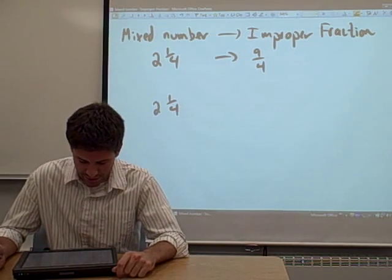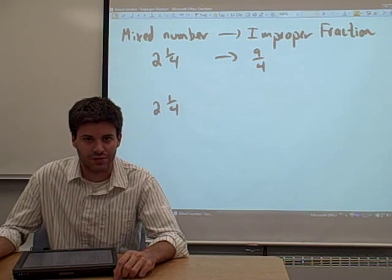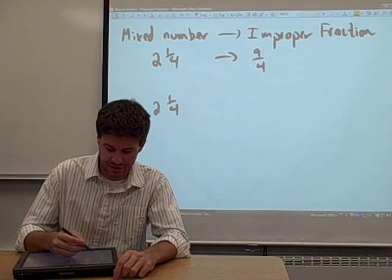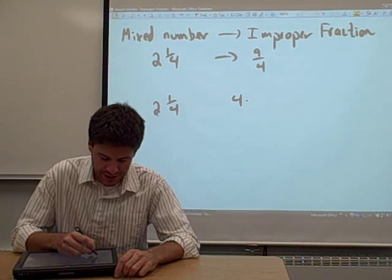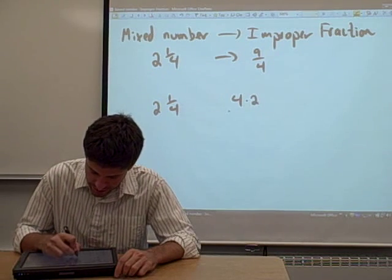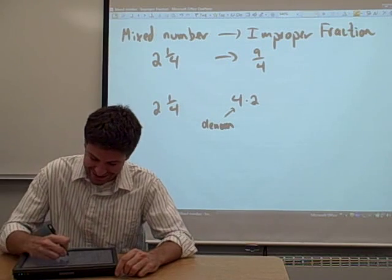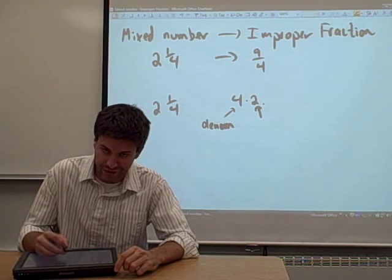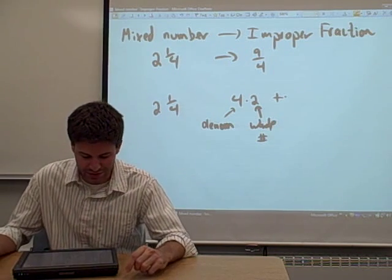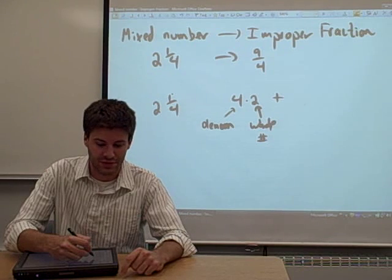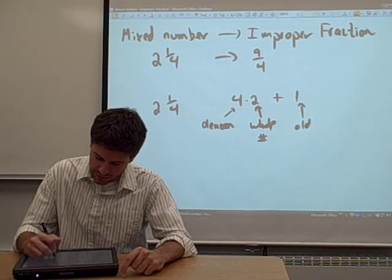2 and 1 quarter. What you do any time you have a mixed number and you want to convert it to an improper fraction is you take the denominator — the 4 — and you multiply it by the whole number in the problem. Then you add to that result the numerator from the mixed number. In this case, it's a 1 — the old numerator.